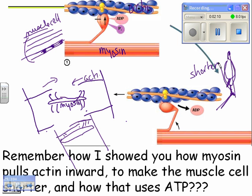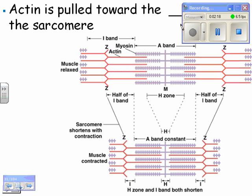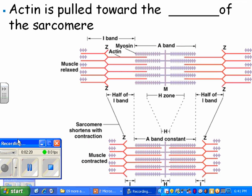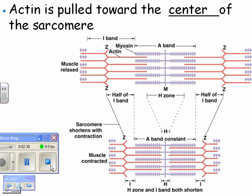So I have a video next that you won't be able to see with my screen capture, but I will put it on. The actin is pulled toward the myosin, toward the center of the sarcomere. What I want you to know is that this one is all stretched out and relaxed, and this one has contracted. On a quiz, I would put these two and ask you which one's contracted or which one's relaxed.